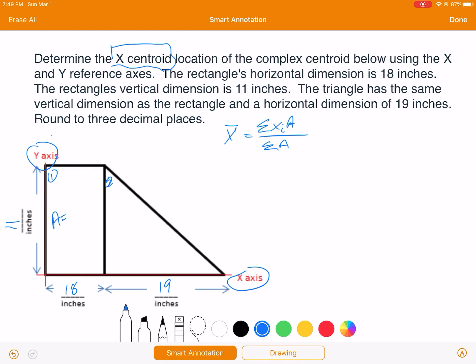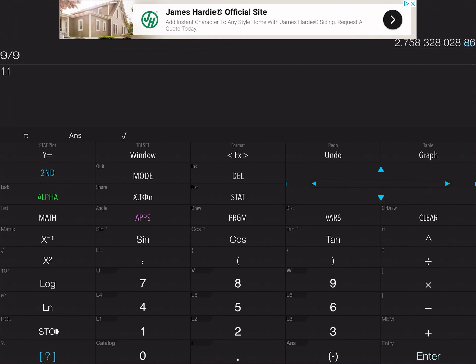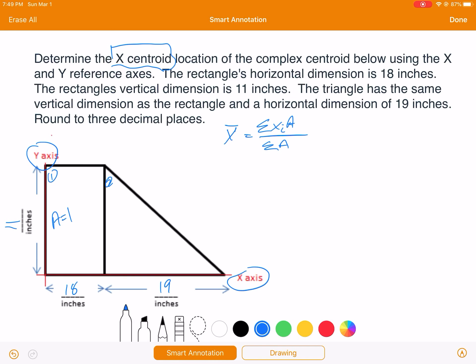So first let's look at the areas. The area of the rectangle is going to be 11 times 18, which we all know... 11 times 18 is 198, so our area is 198 inches squared.